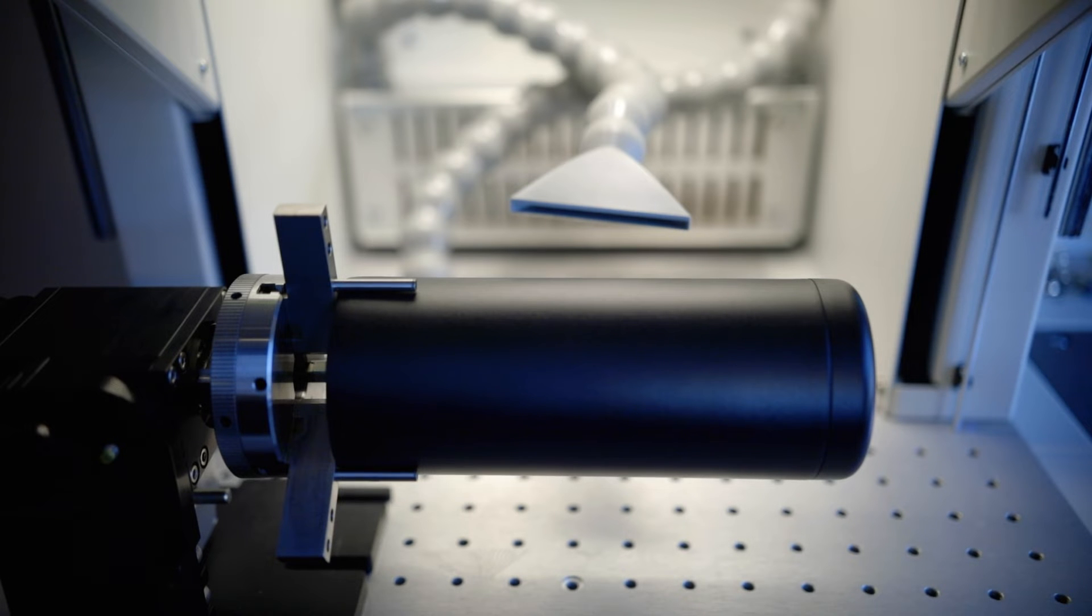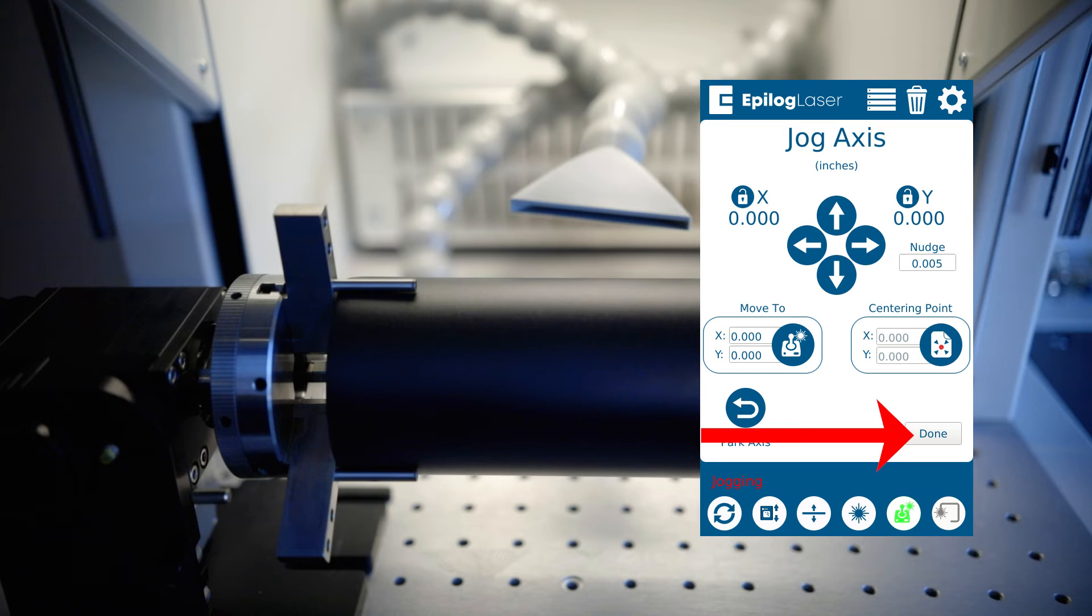So let's set up that home position. We're going to use that with the joystick control. You'll see that we've got the red spot illuminating on the part. And I'm going to move that over to where I want that to be the center of my graphic. That looks pretty good there. I'm going to hit centering point on the display panel and then done.